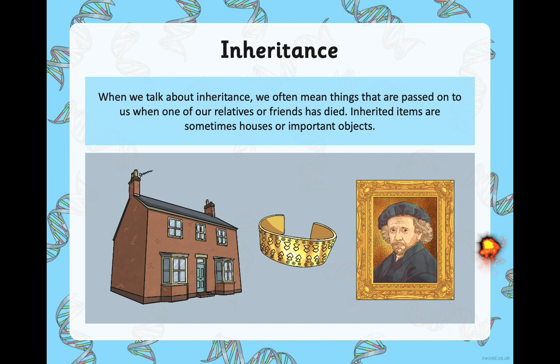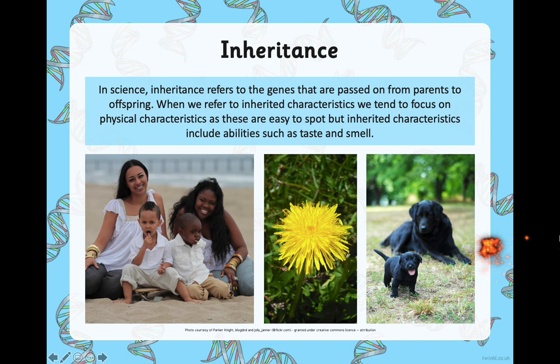We often mean things passed on when a relative dies — inherited items like houses or important objects. We've touched on this in some of the books we were reading earlier in the year. But this is not the scientific definition of inheritance. In science, because there is a lot of crossover vocabulary, it's important to recognise that although we use that word in everyday life, this is not the scientific definition. In science, inheritance refers to the genes that are passed on from parents to offspring — to their children. When we refer to inherited characteristics, we tend to focus on physical characteristics because these are easy to spot.